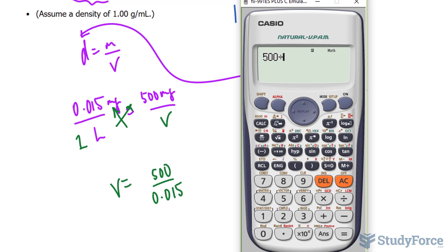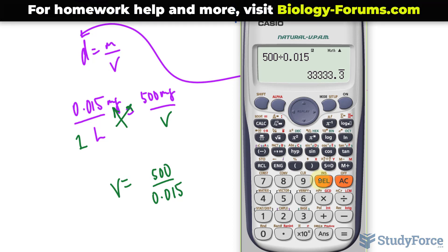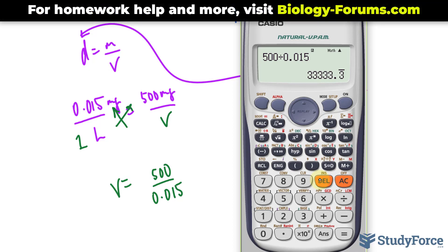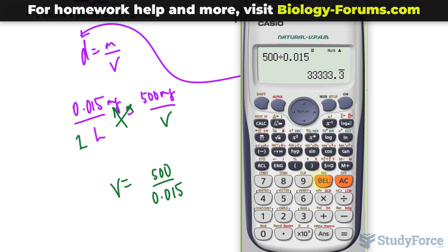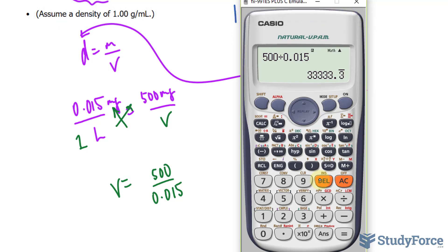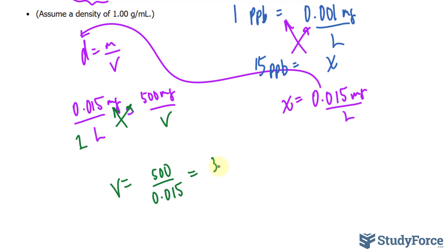Dividing these out, let's use our calculator, 500 divided by 0.015 gives us 33,333.3 repeating liters. And remember we want this to two significant figures. So we have 33 represented as 3.3 times 10 to the power of 4 liters.